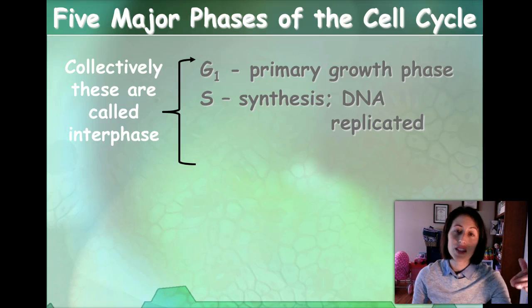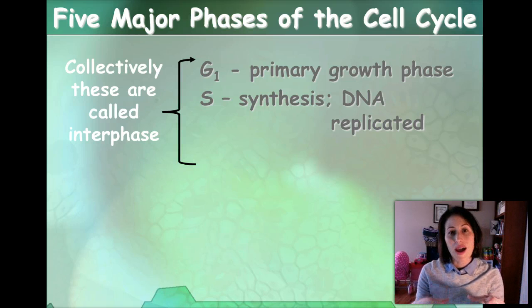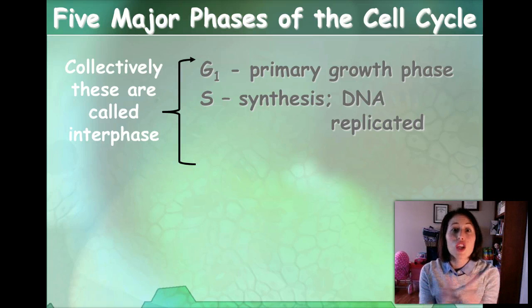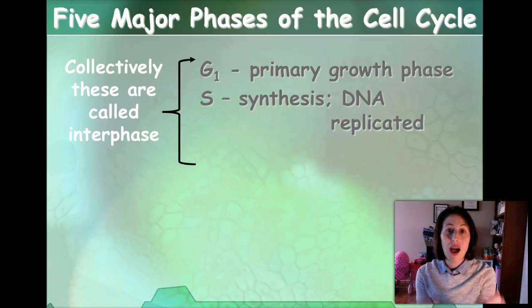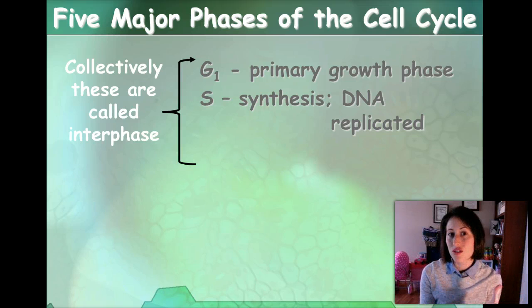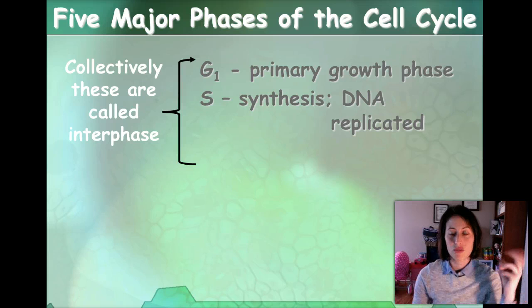After S phase, this is a diploid cell because it's a body cell. In a human cell, it has 46 chromosomes, and then each chromosome has its copy. So there's a ton of chromosomes in the cell.